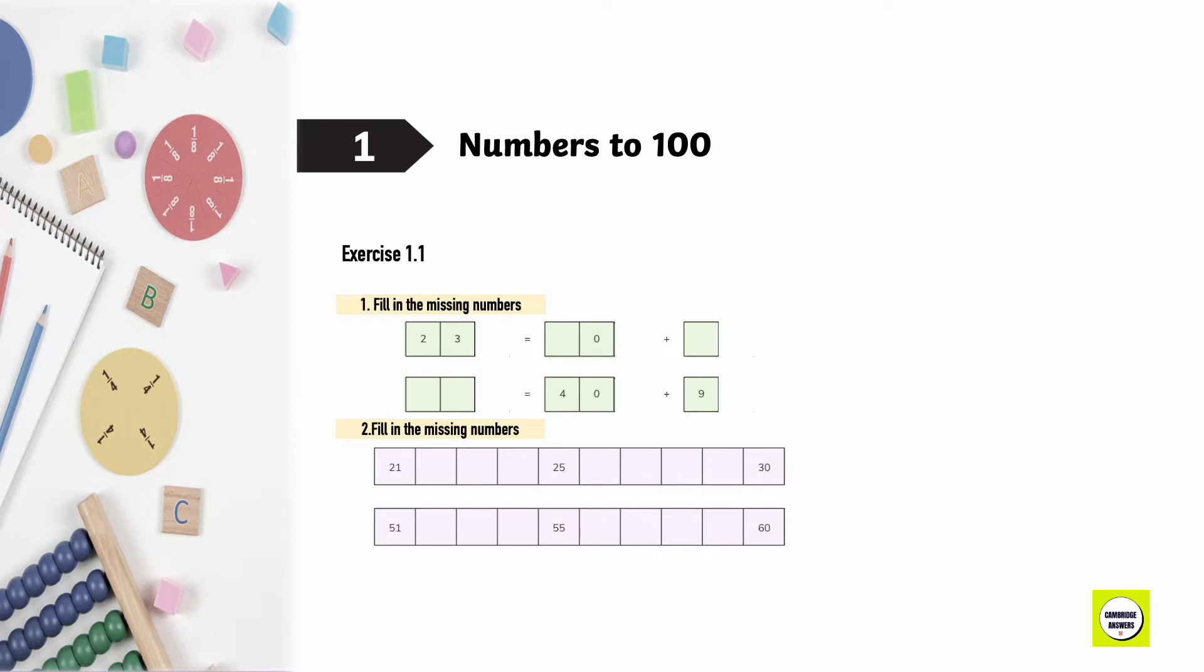Numbers 200. Exercise 1.1. Fill in the missing numbers. 23 is equal to 20 plus 3. 40 plus 9 is 49. Fill in the missing numbers. 21, 22, 23, 24, 25, 26, 27, 28, 29, 30.